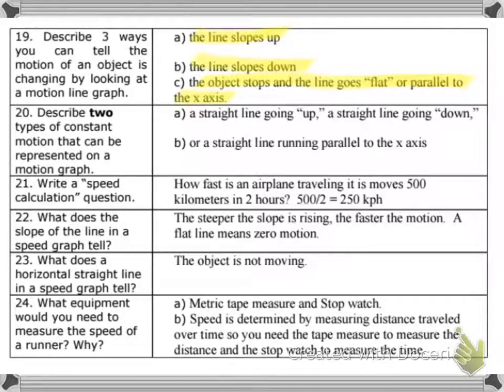Twenty-one. Write a speed calculation question. And this says, how fast is an airplane traveling if it moves 500 kilometers in two hours? Well, distance divided by time, so 500 kilometers divided by two, which is the time, two hours, equals 250 kilometers per hour. All right. You can make up your own if you want.